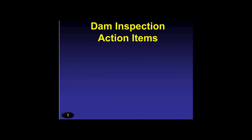When you do a dam inspection and find something unusual, what do you do? For minor deficiencies, one action item would be to monitor it — for example, a crack in a wall or a minor seepage condition. Note it on your checklist and make measurements; quantify seepage or measure the crack size. If you see something more significant, you may need to repair or maintain the deficiency — such as repairing vandalism, lubricating a gate hoist, clearing a trash rack, or removing unwanted vegetation. Repair or maintenance is something a dam owner and operator can do without coordination with state officials.